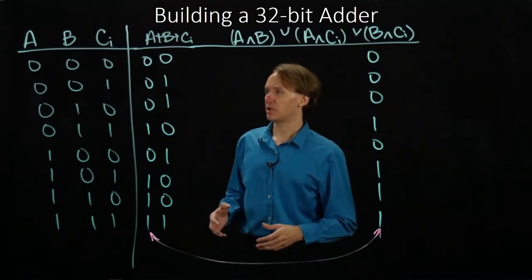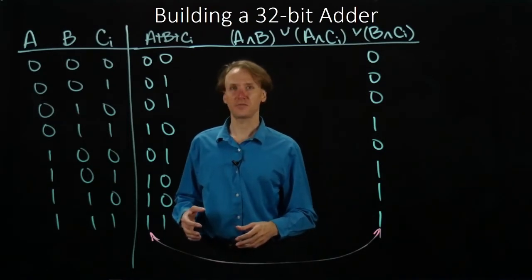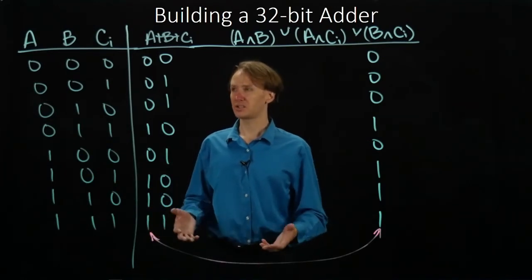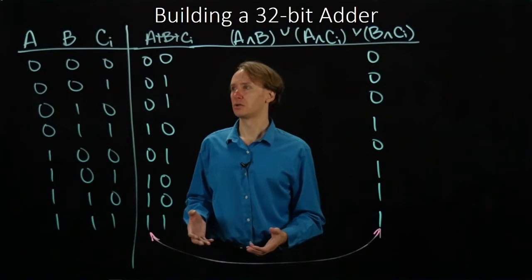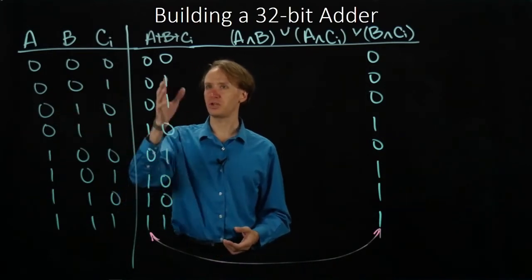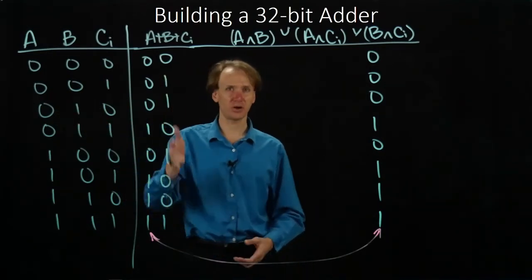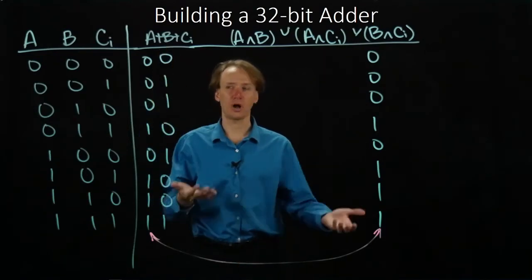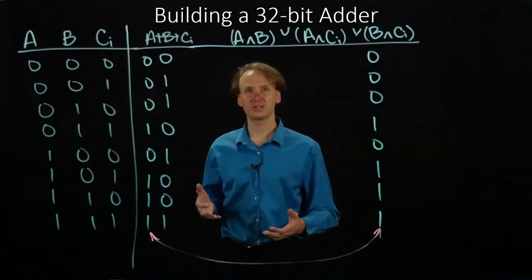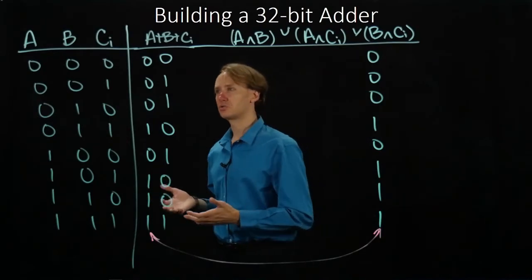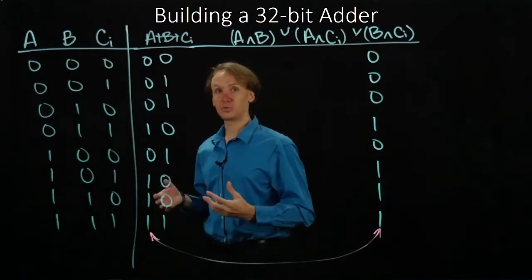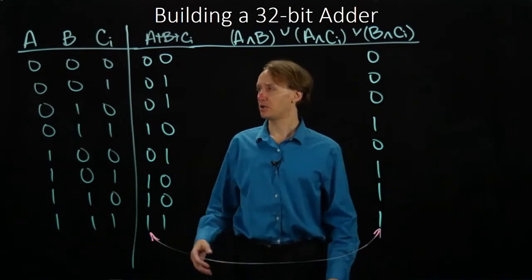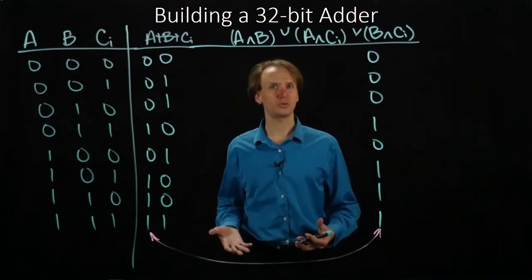One thing that our XOR gates do is they tell us if our inputs are the same, if they have the same parity. Really, that's the sort of thing we're interested in here. We're interested in the parity. This is kind of a parity bit here. It's telling us whether our output is even or odd, so our XOR gate is actually relevant to that sort of operation. That was easy to see when we only had two input bits, but with three input bits, that's not quite so obvious.